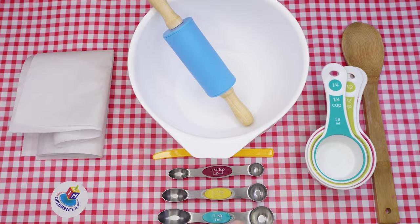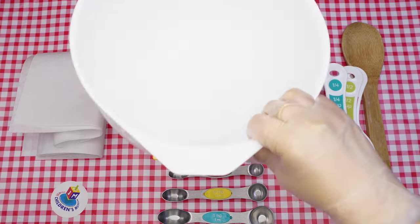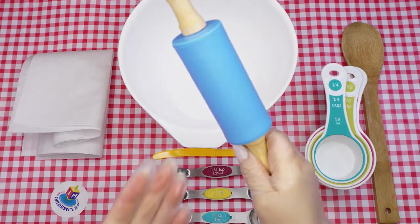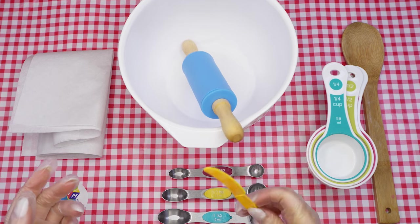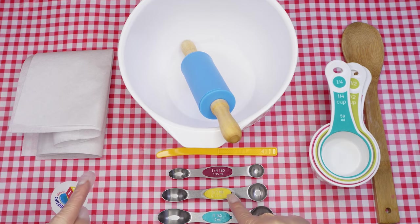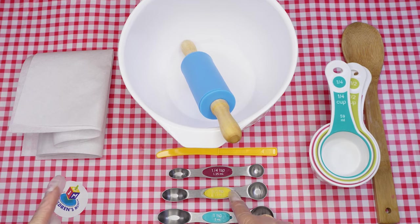Here are the baking supplies that we'll need: a mixing bowl, a rolling pin, a plastic knife, and measuring spoons - a teaspoon, a half teaspoon, and a quarter teaspoon.